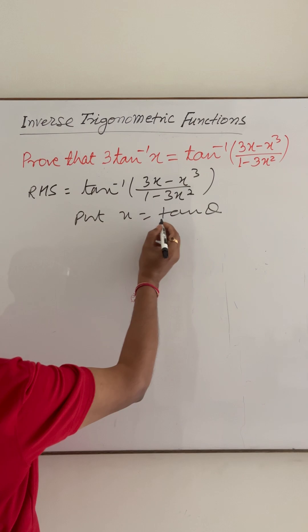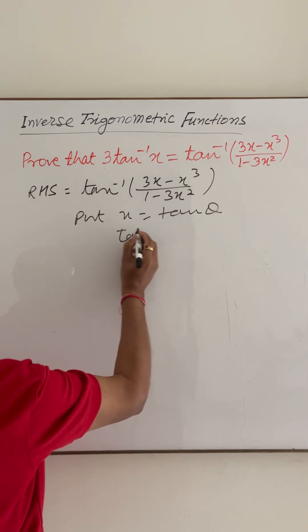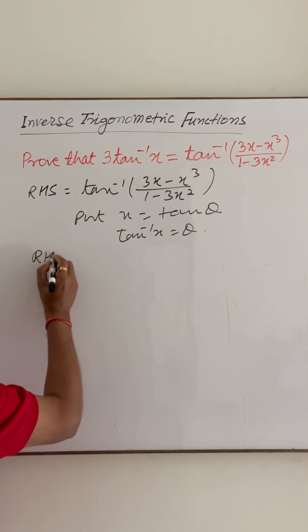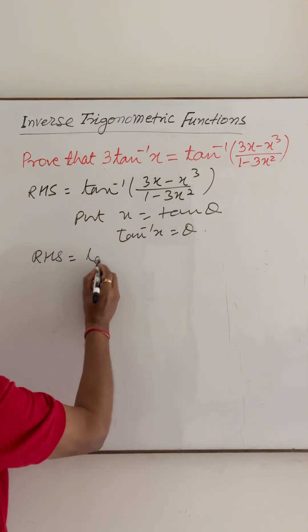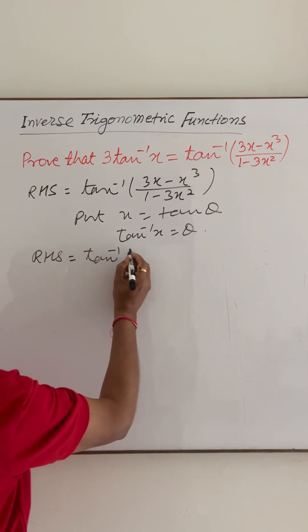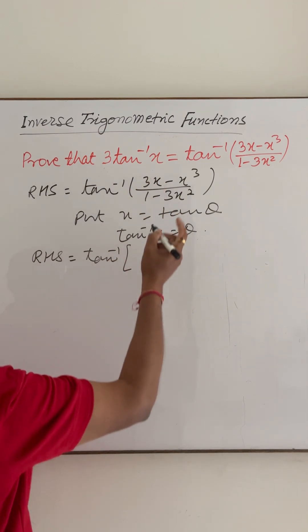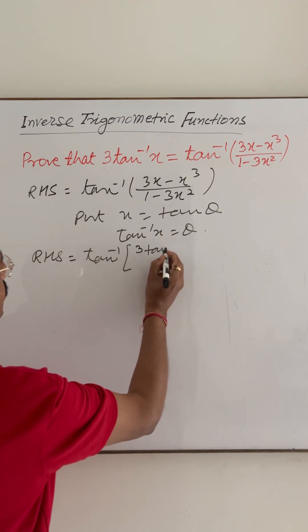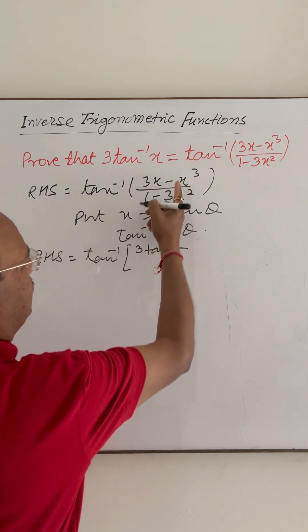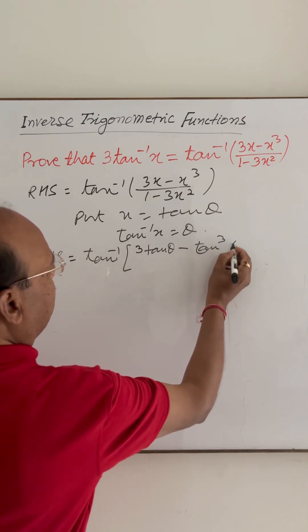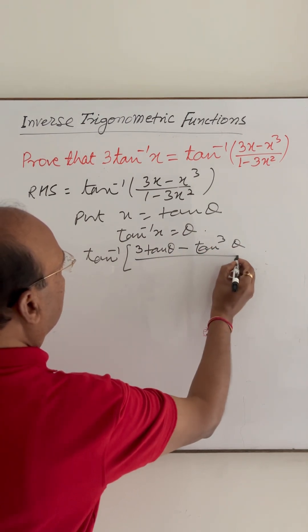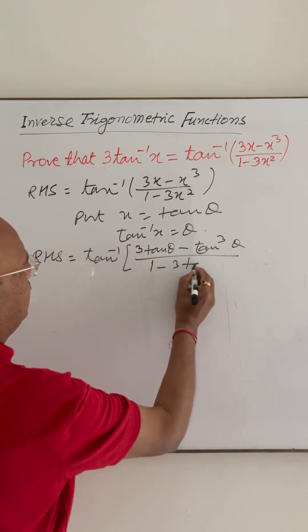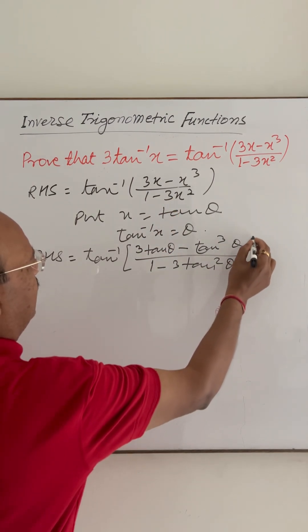Then we will get here tan inverse of x is equal to theta. So here right-hand side will now become tan inverse of 3 tan theta minus tan cube theta upon 1 minus 3 tan square theta.